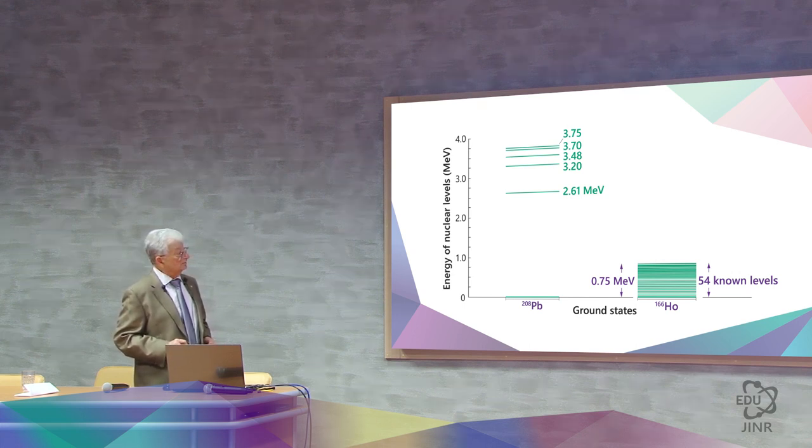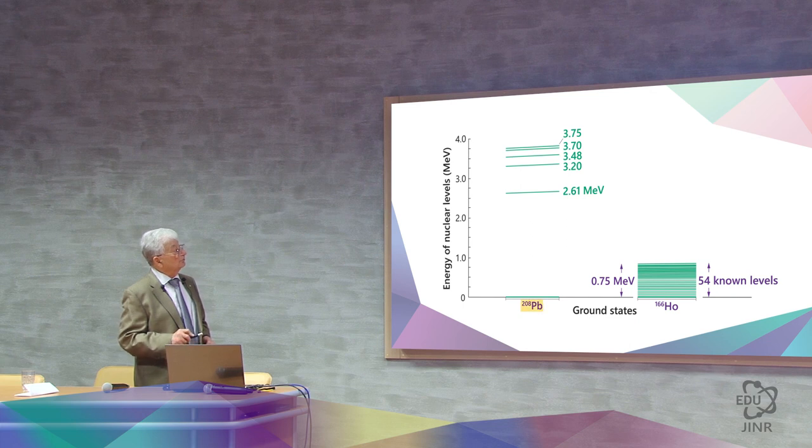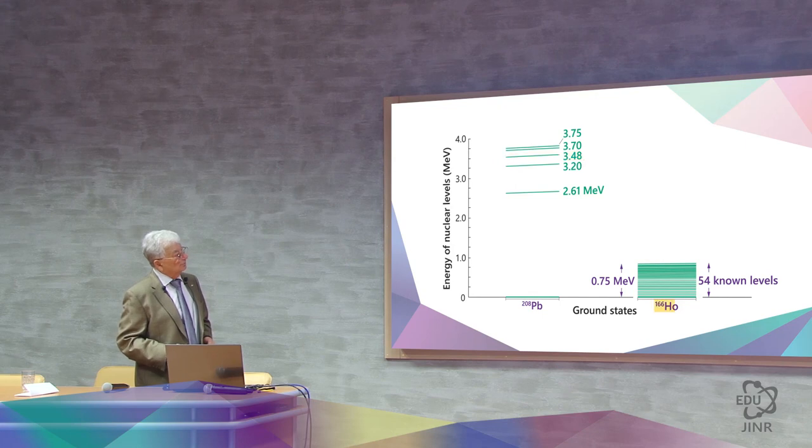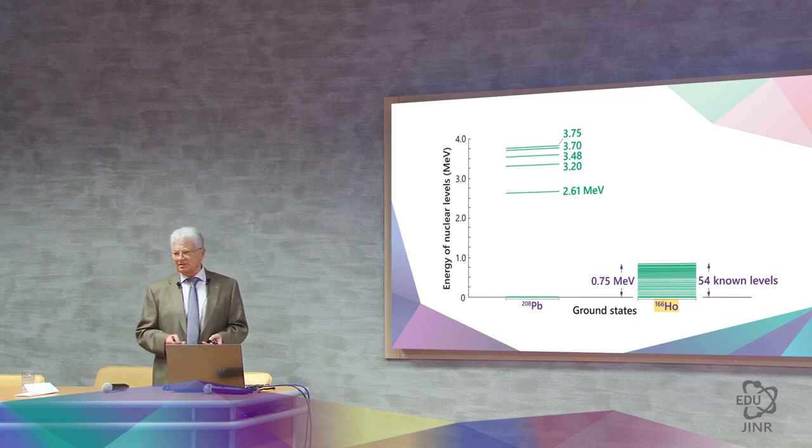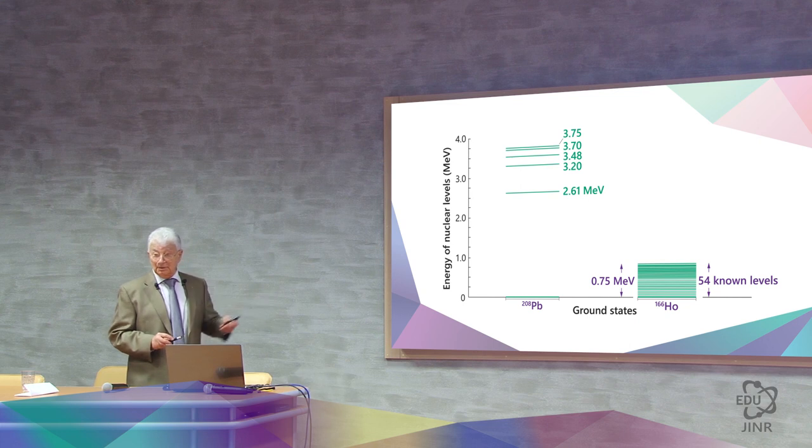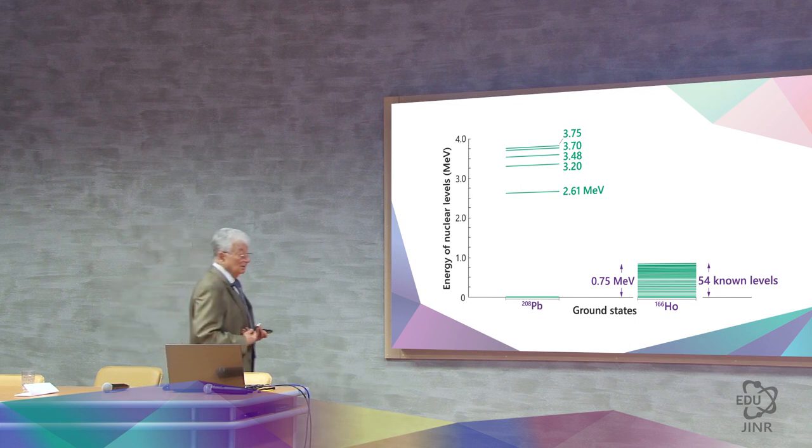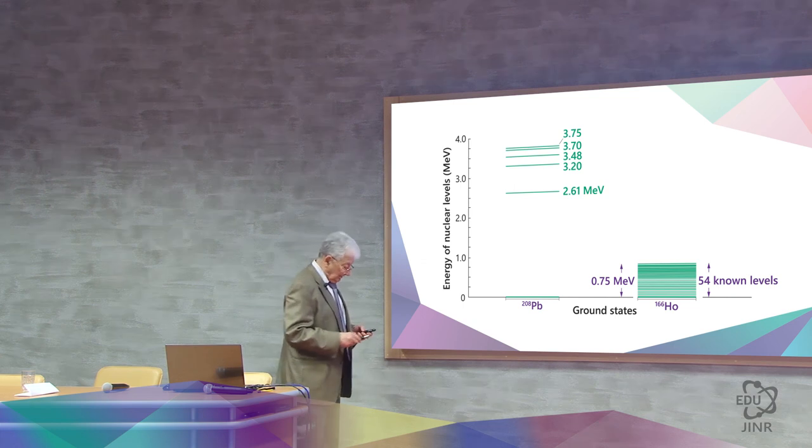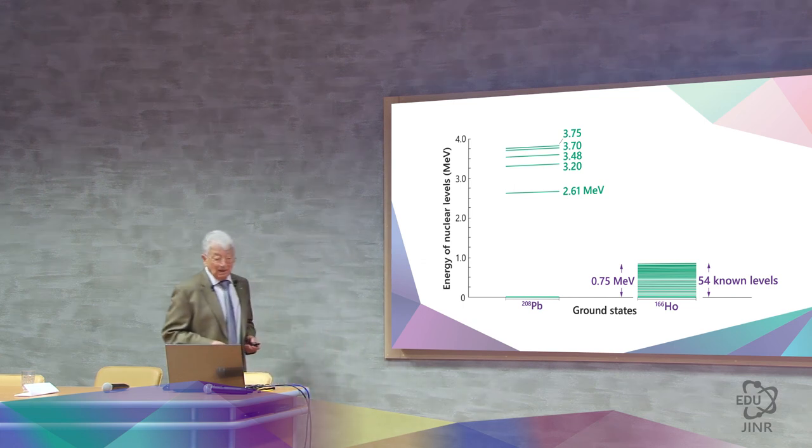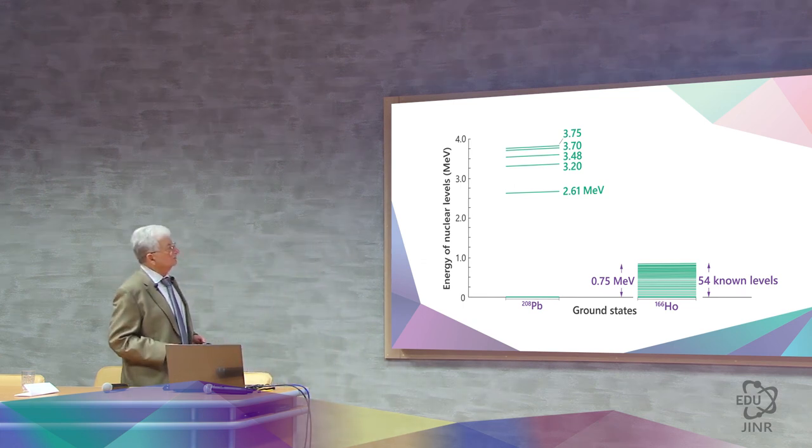And here's how the nuclei differ from each other. For example, if we look at the nucleus of lead, then the next level is here, the next is here, the next is here. And this is the nucleus of, say, holmium. Here the levels only go up to 54. The nuclei are very different. And this difference must be taken into account when we talk about whether the nucleus is stable or unstable, or how this or that structure works.